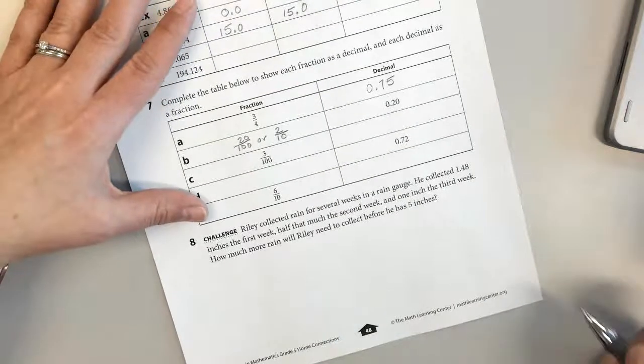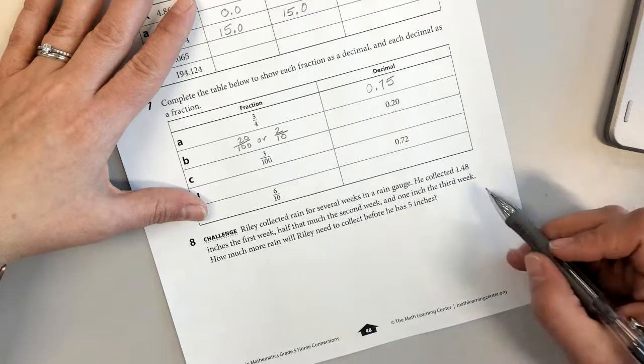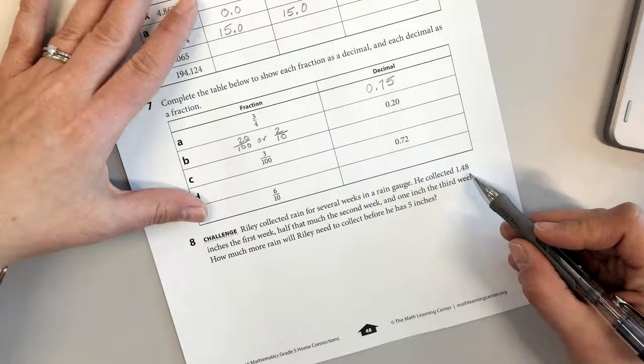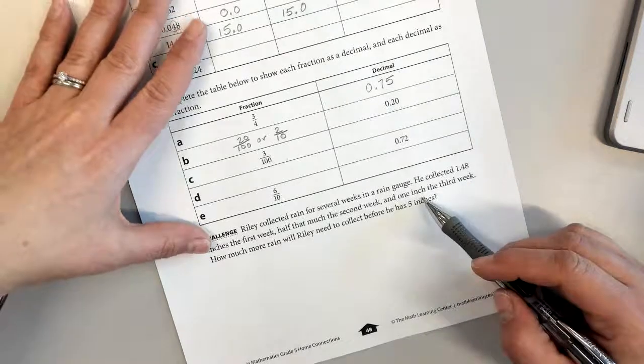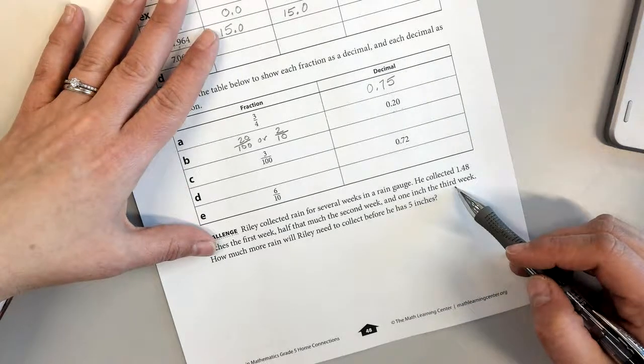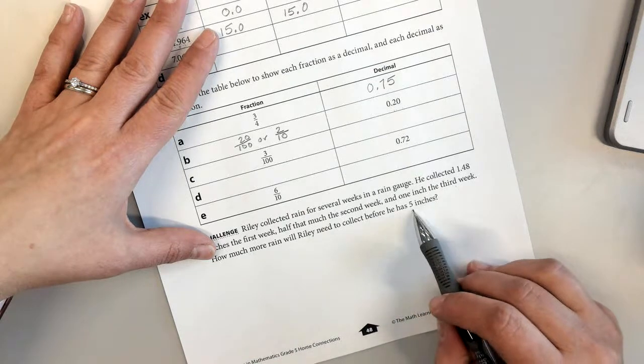In the challenge, Riley collected rain for several weeks in a rain gauge. He collected one and forty-eight-hundredths inches the first week, half that much the second week, and one inch the third week. How much more rain will Riley need to collect before he has five inches?